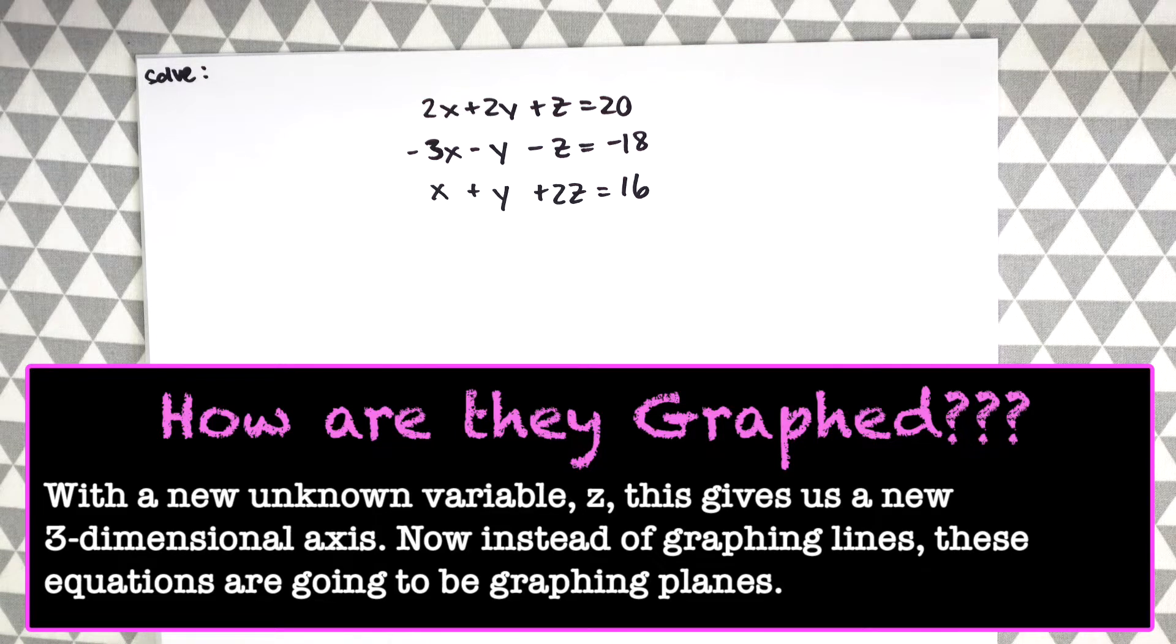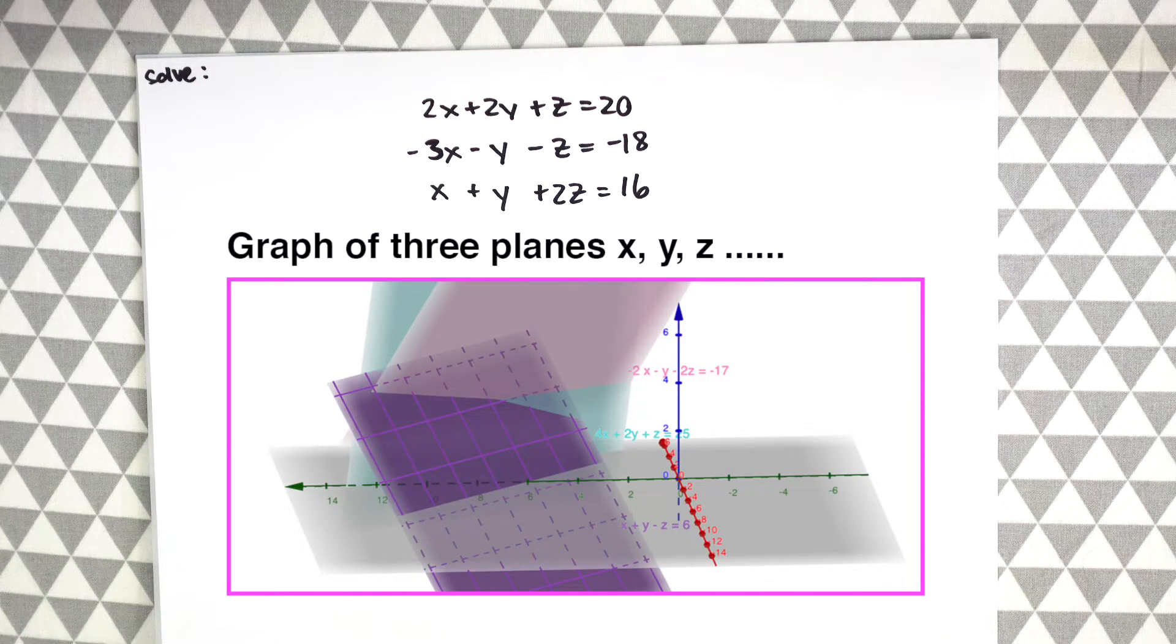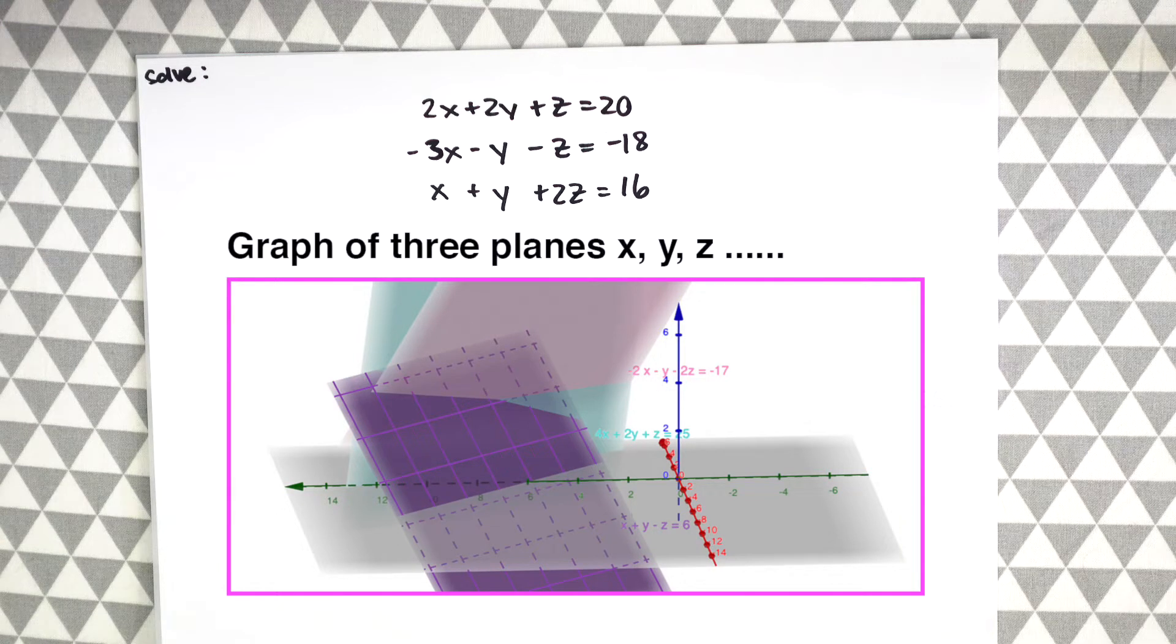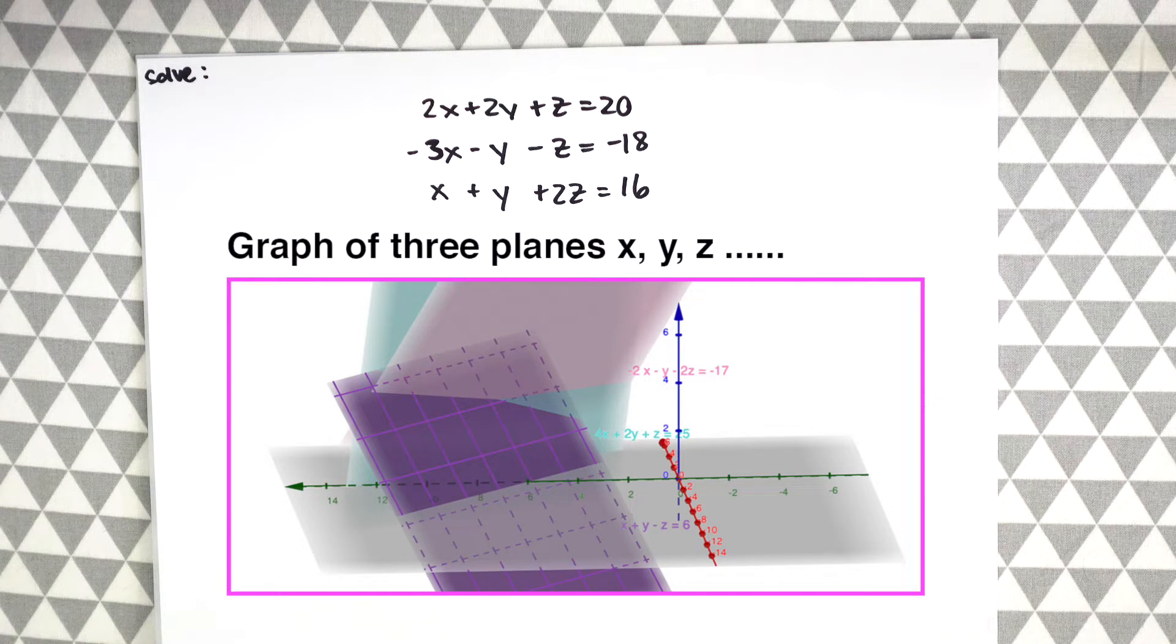So instead of graphing lines with these equations, they end up graphing as planes. So just to give you an example of what this looks like, it might look something like this. You won't have to worry about this though, this looks crazy I know, but it's just to give you an example of what this looks like graphically, but you won't be asked to make this on a test or anything.